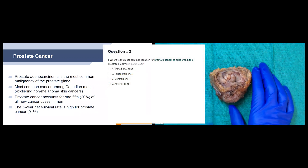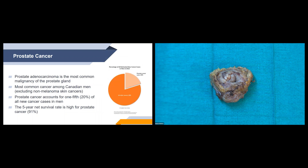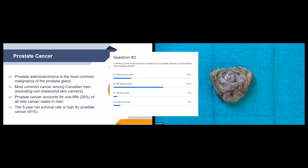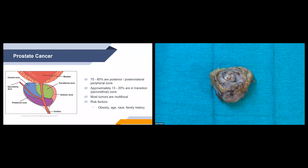The most common location for prostate cancer to arise is the peripheral zone. About 75 to 80 percent of prostate cancers are located within the peripheral zone. The prostate is broken down into four different zones: the peripheral zone, central zone, transitional zone, and anterior zone. The transitional zone is the second most common site for prostate cancer, making up approximately 13 to 20 percent of cases. Prostate cancer is also often multifocal.